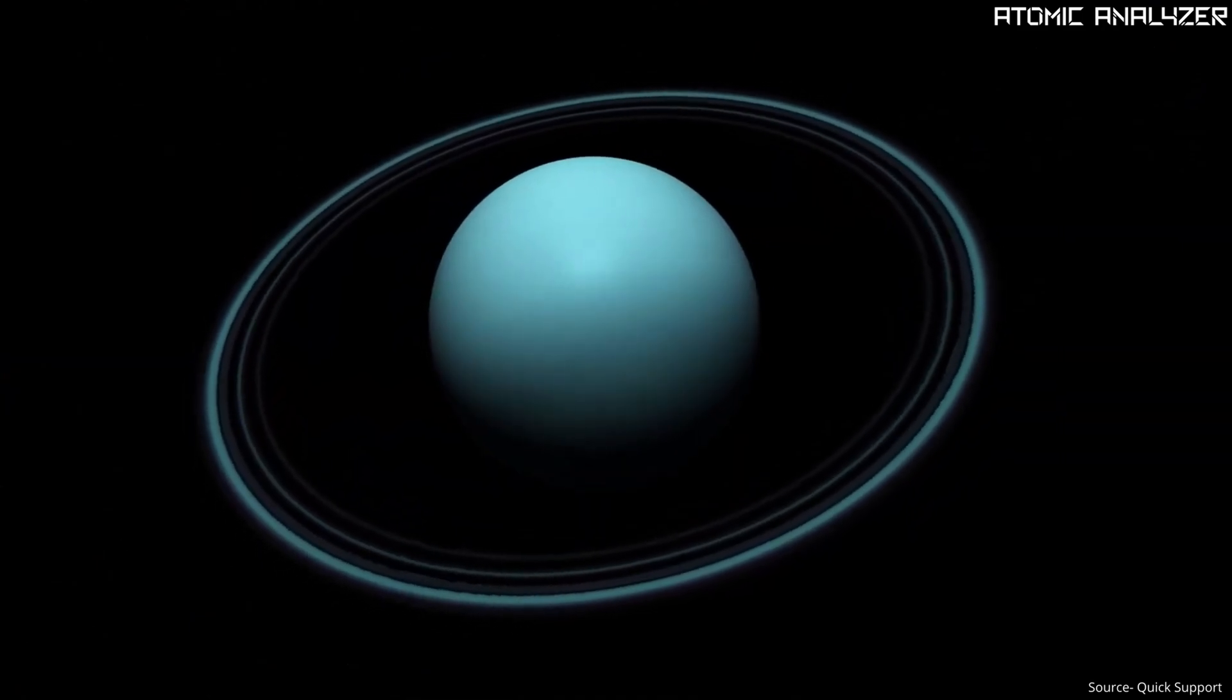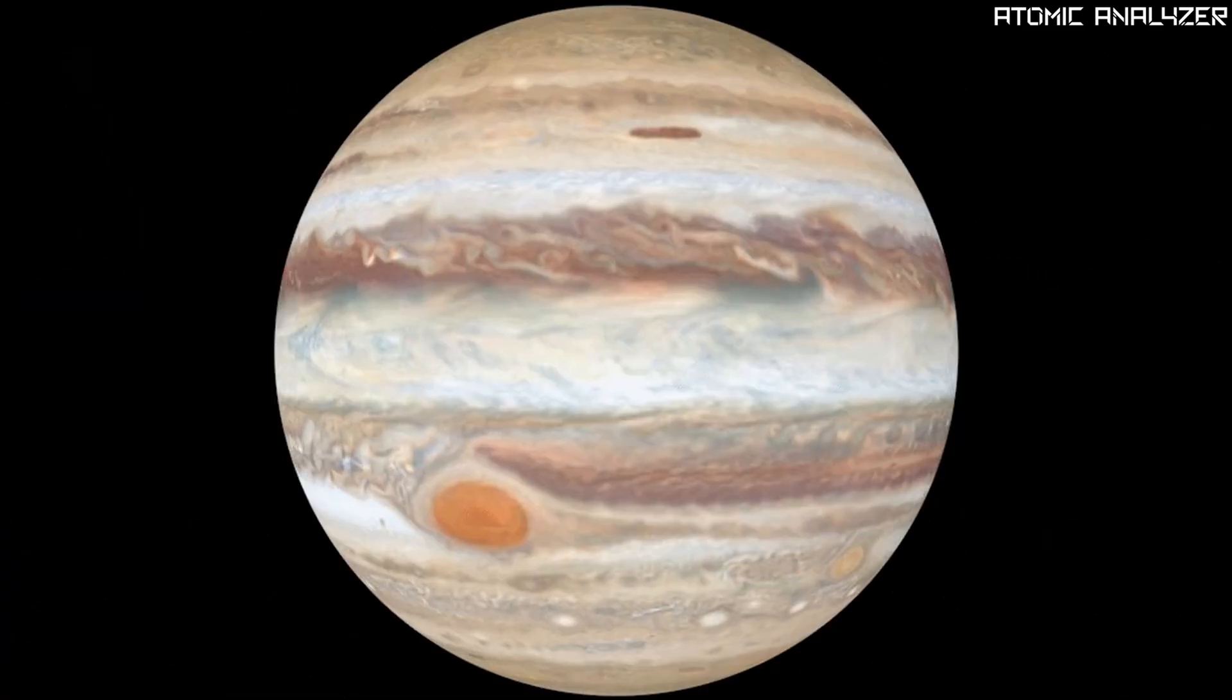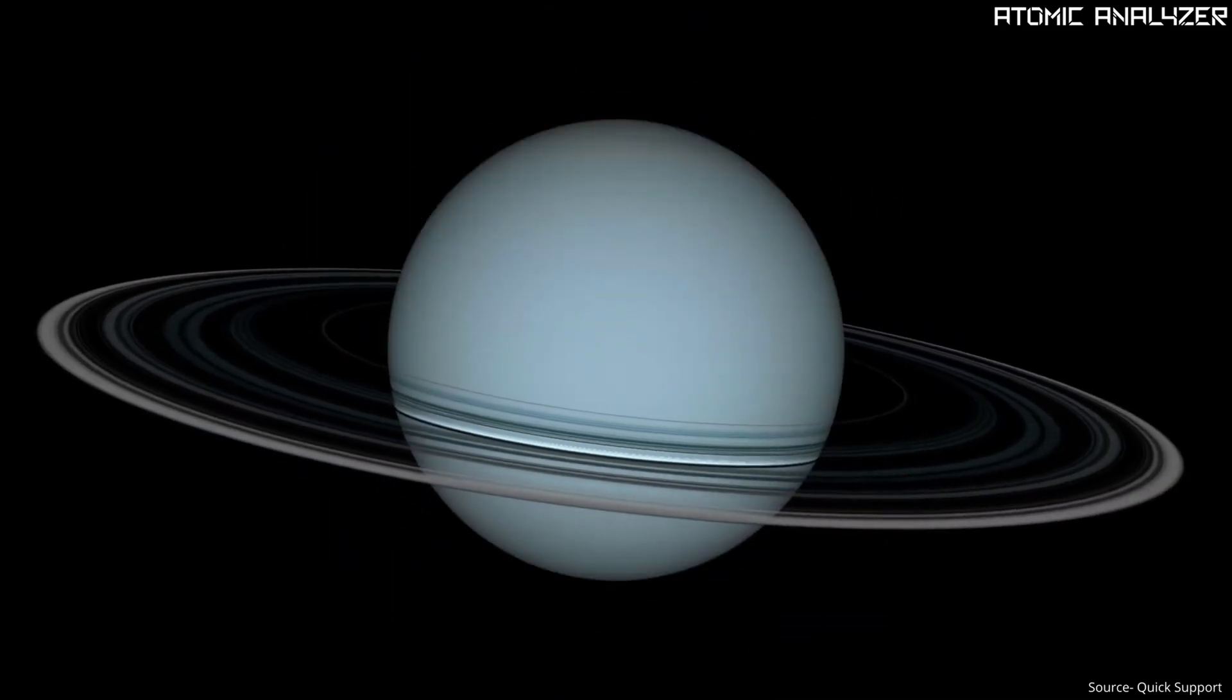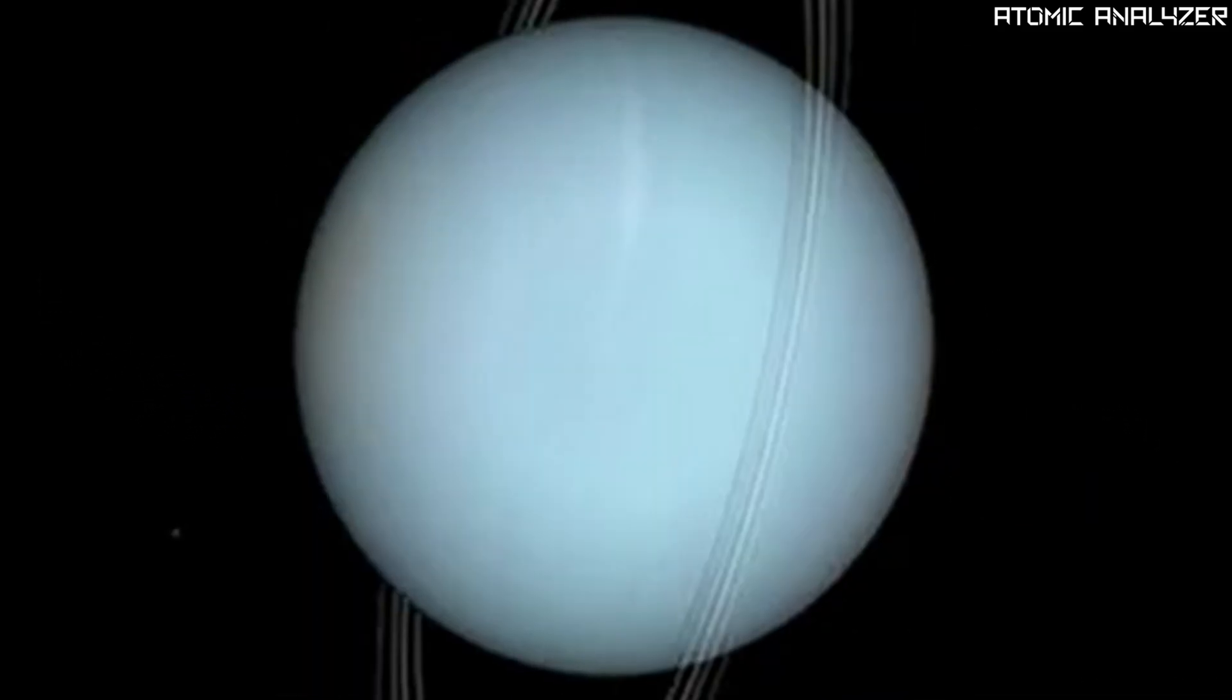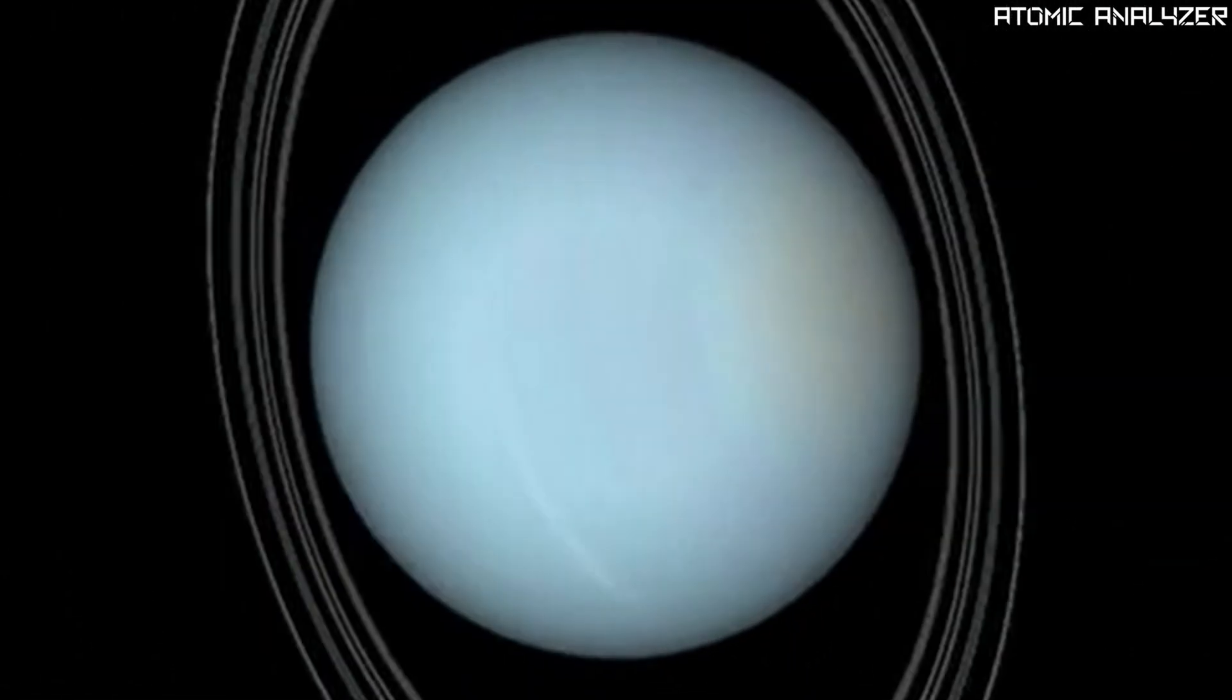One of the most fascinating things about Uranus is its unique rotation. Unlike most planets, it doesn't spin like a top, instead it rolls on its side. Imagine trying to walk on a planet that rotates sideways. It would be a wild experience.